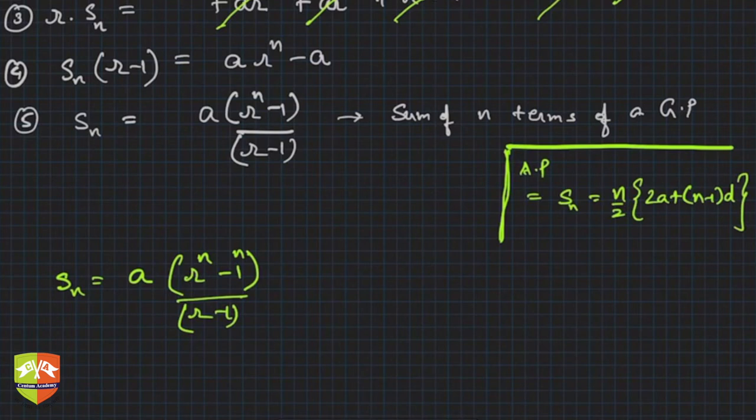This is how much? A times (1 + r + r² + ... + r^(n-1)). Yes or no? This is what we got. Clear? If I cancel a from both sides what do I get?